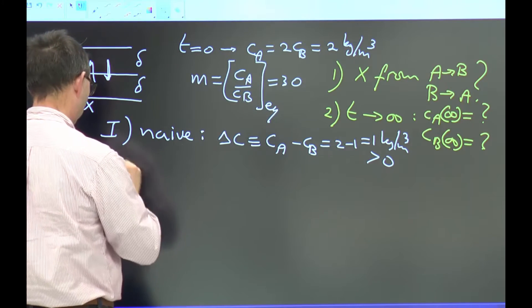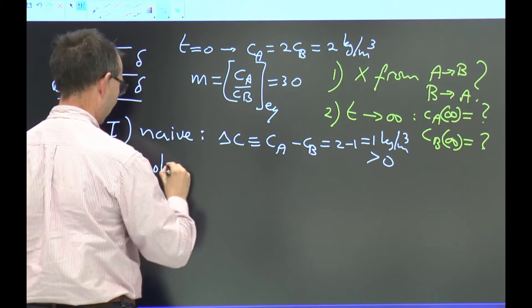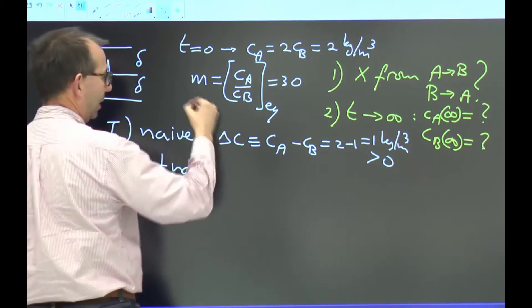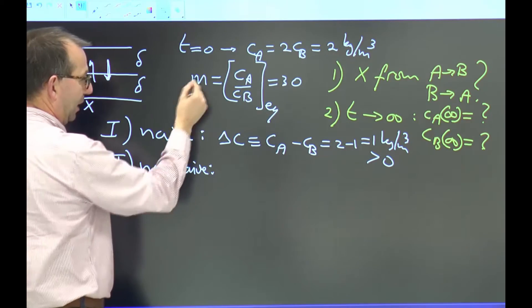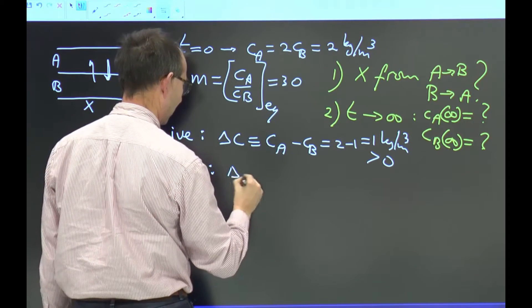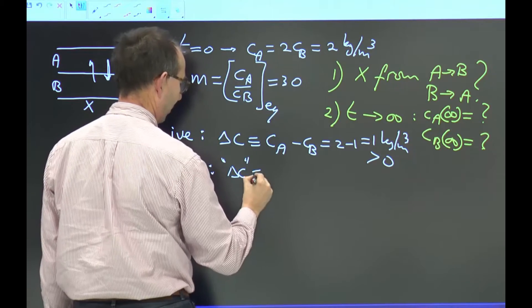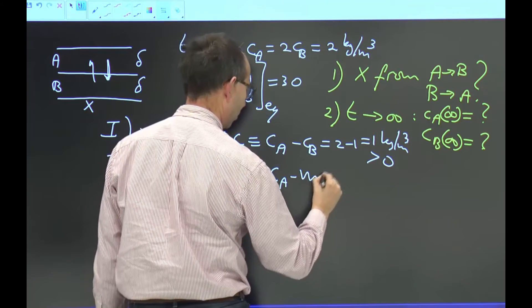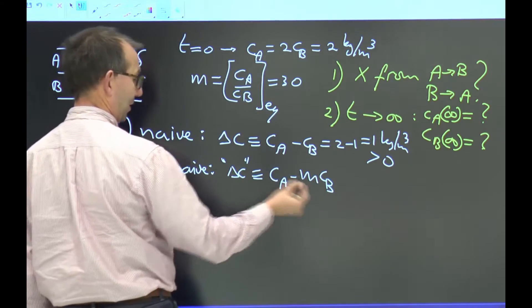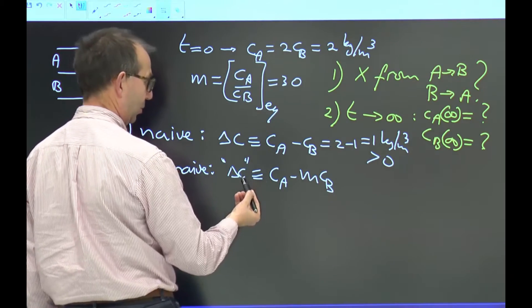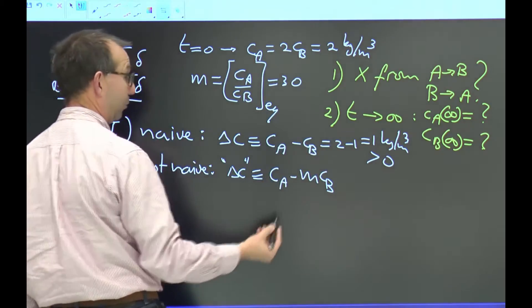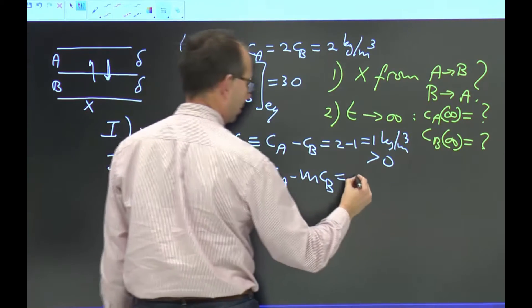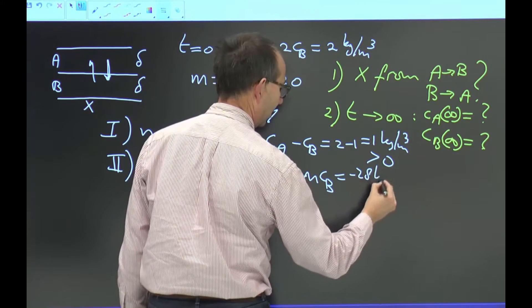Actually, approach 2, not so naive, is realizing that this is transport across an interface and that the equilibrium distribution comes into play, the M. Thus the actual ΔC should not be defined as the simple difference between the concentrations but should be defined taking that M into consideration. As now in equilibrium this driving force is zero, whereas in equilibrium this driving force is far from zero, and this is 2 minus 30 times 1 is minus 28 kilogram per cube,